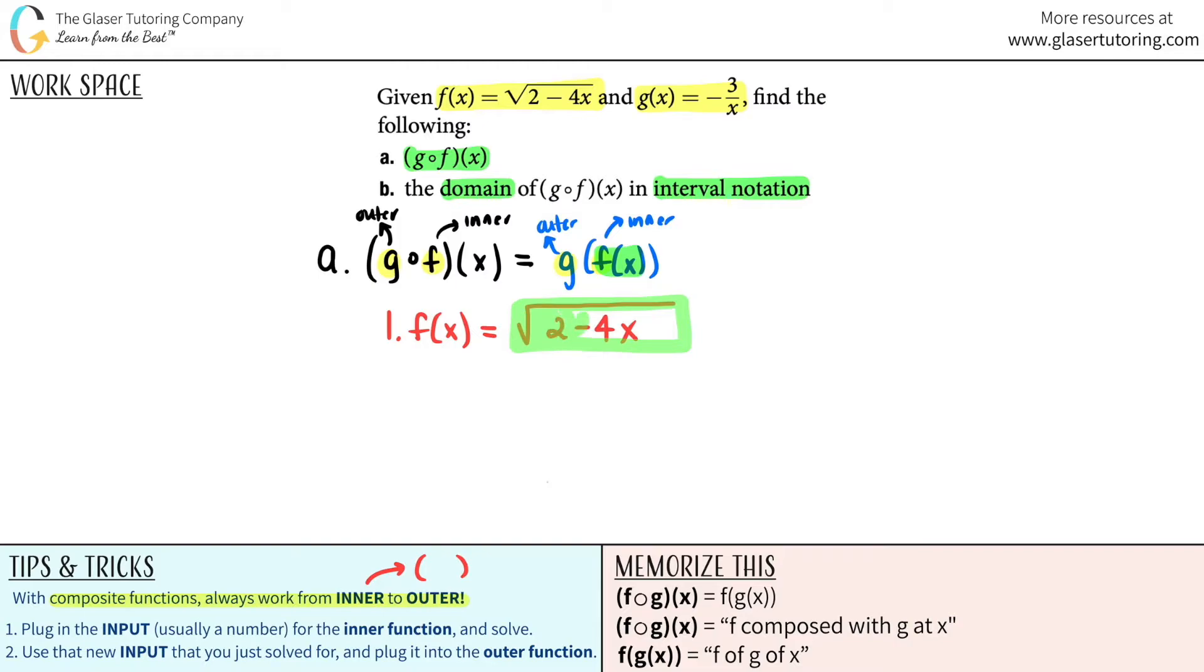But what's going to happen is this answer, this output becomes the input for the outer function. And that's what it says over here. Use that output. It's now an input that we just solved for and plug it into the outer function. And the outer function here was the g function. And now I'm just going to plug in what I'm solving for now. It's the square root of two minus four x, which means that for the g function, whenever I see an x, I'm just going to replace it with the square root of two minus four x.